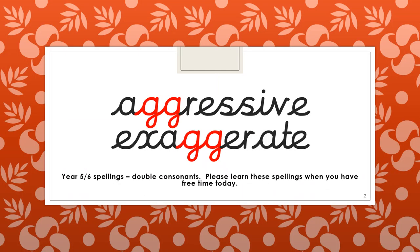Our spellings for today are aggressive and exaggerate. Again two double G's, you've got your double consonants. Remember we'll be doing just a spelling check on Friday of the words we're learning in the morning. This is quite informal and I don't want anybody to stress about this please.